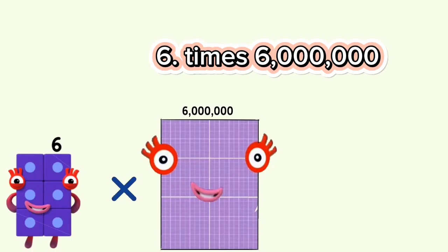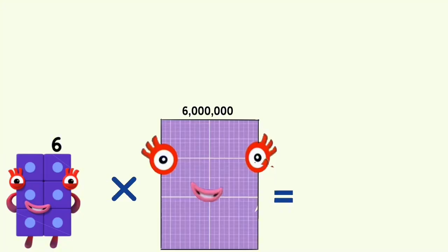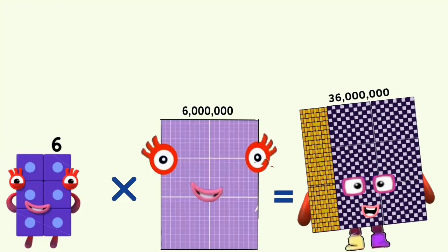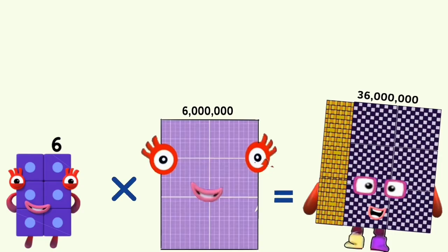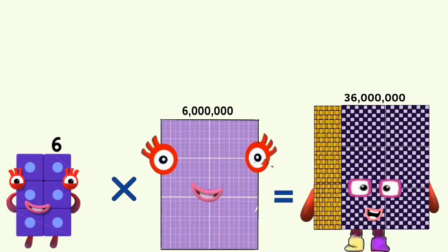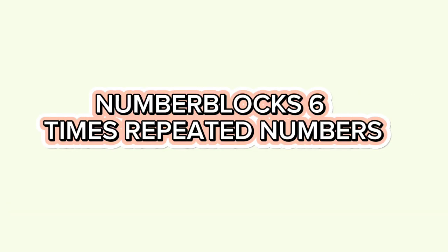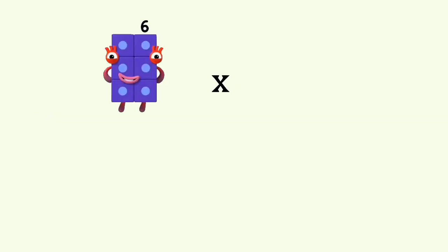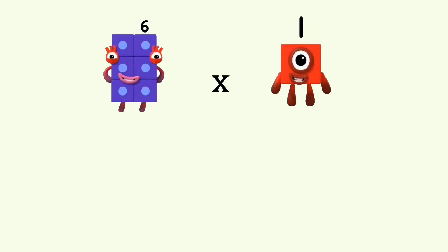6 times 6,000,000 equals 36,000,000. Number block 6 times repeated numbers. 6 times 1 equals 6.